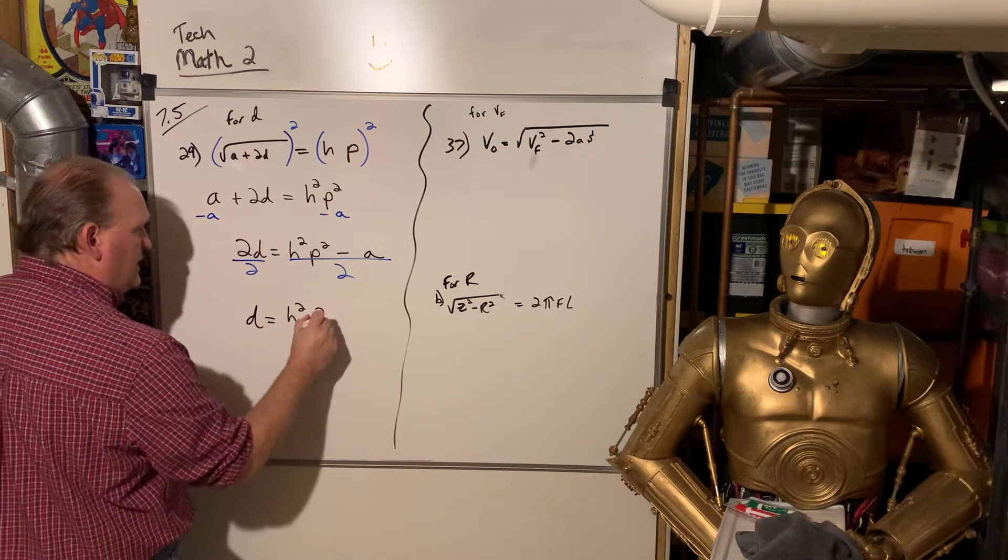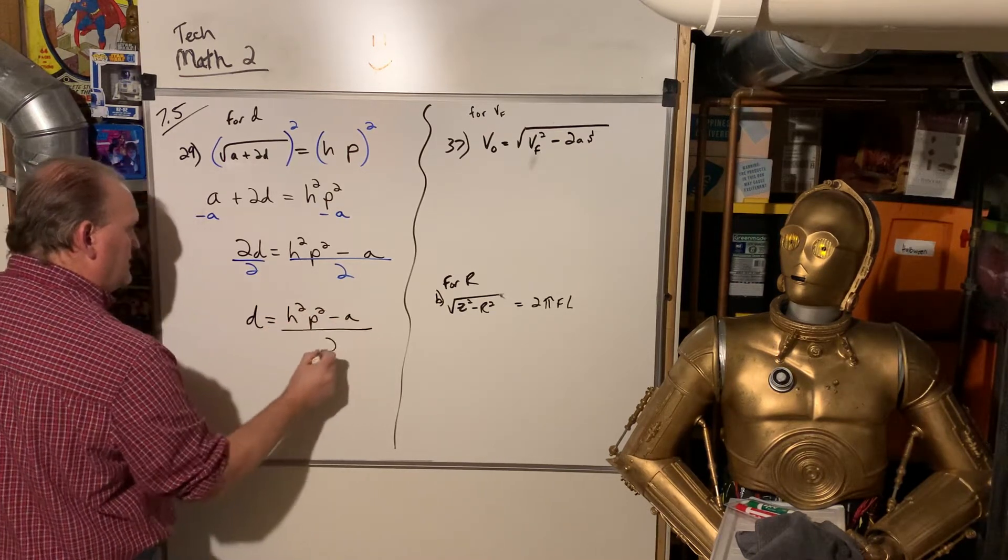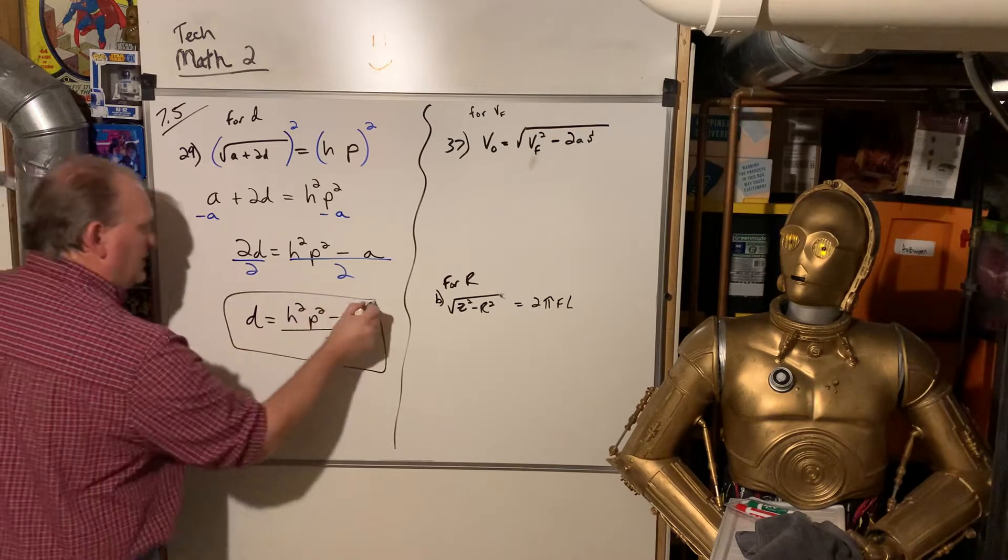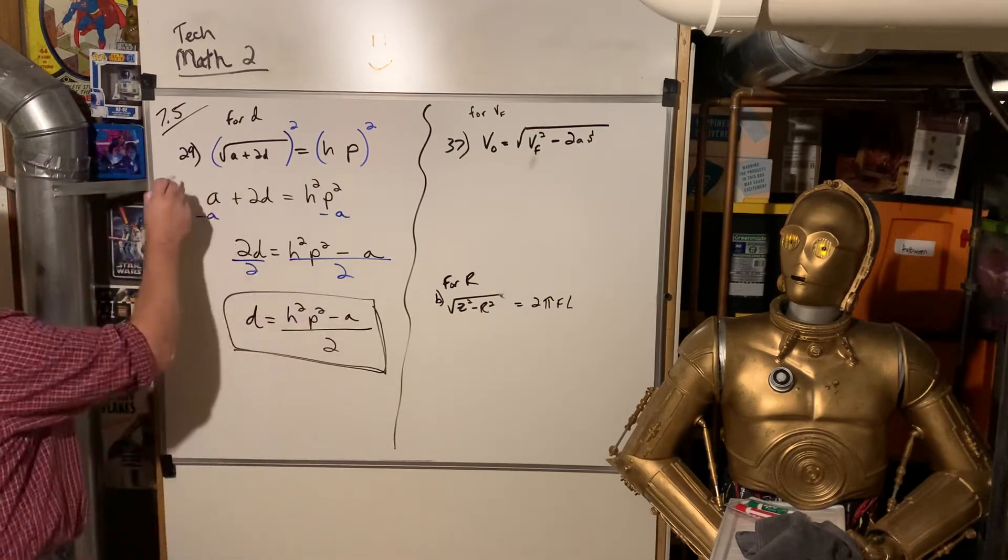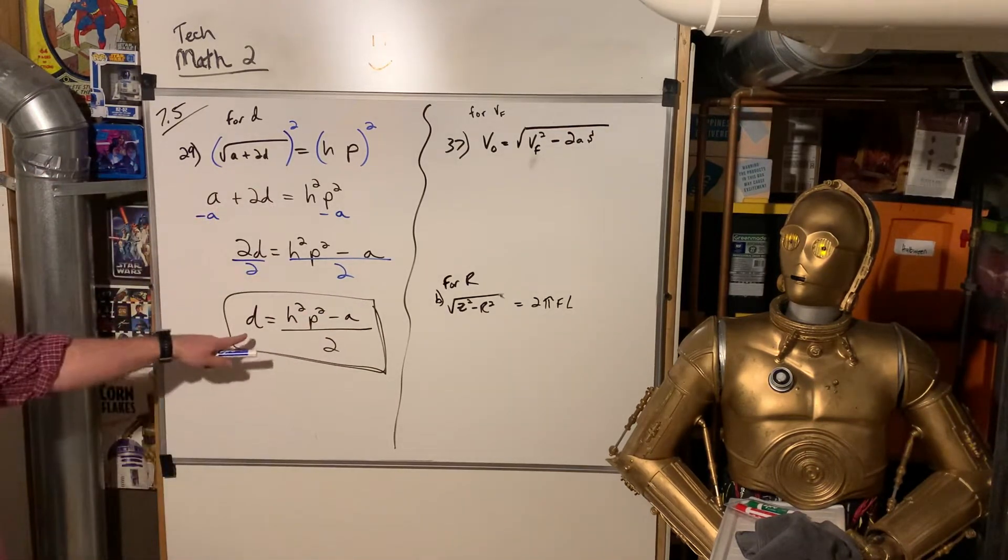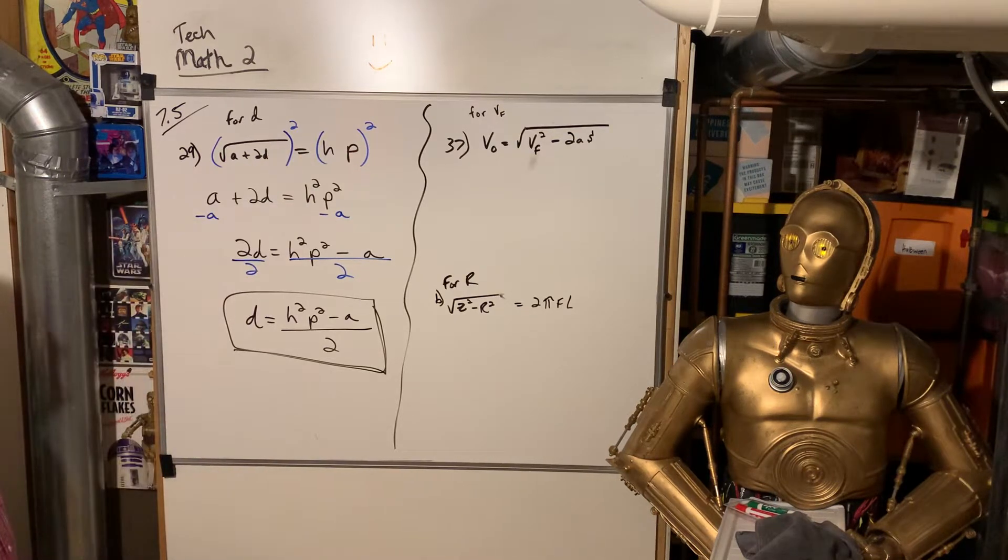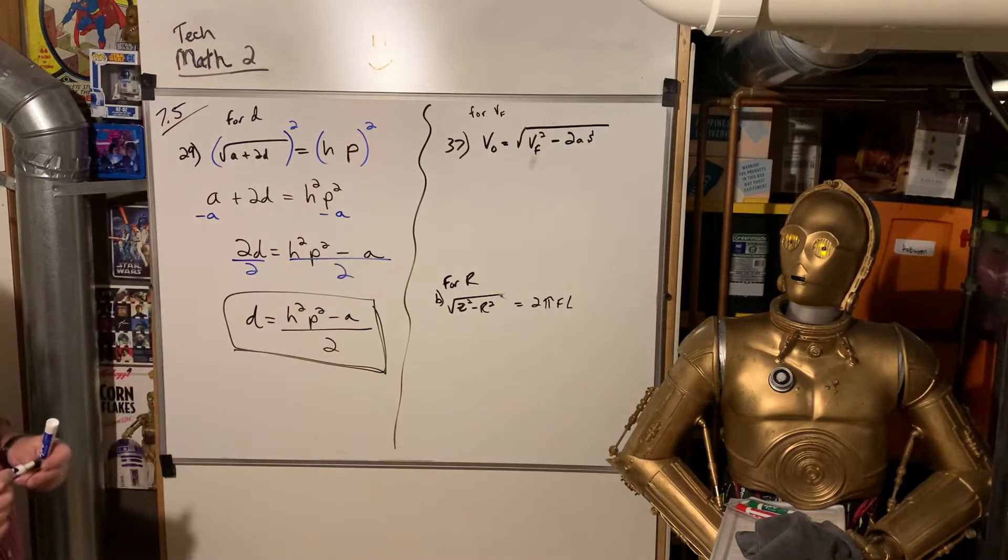You can't actually divide because we don't know what they are. So H squared P squared minus A, all over 2. Very similar to what we did in the sections before to isolate the variable and solve. We just had this extra step to begin with. Same dog, different fleas.